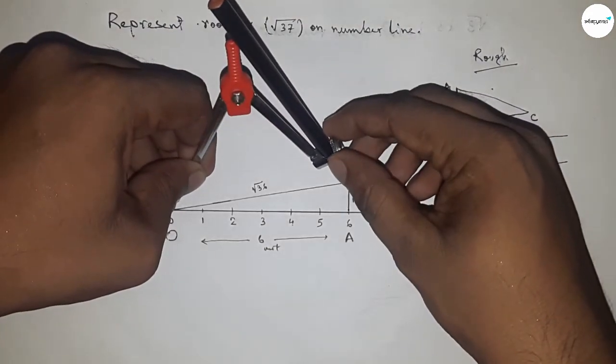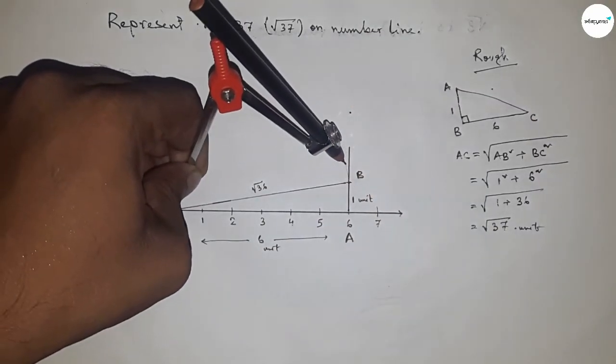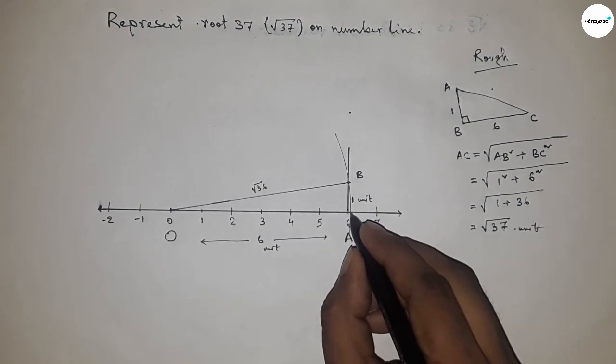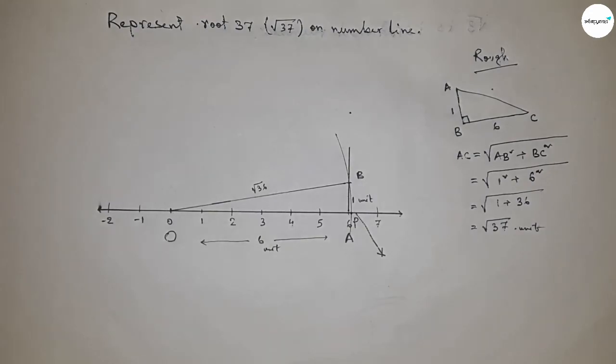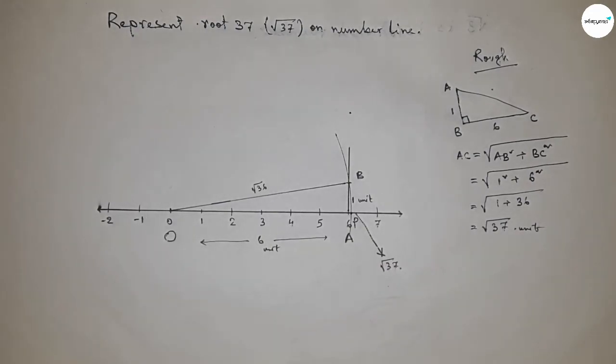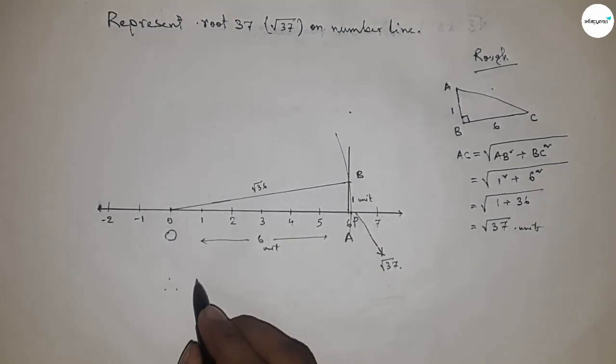Now take the length OB with the compass and draw an arc which cuts the number line at a point. This is point P, and this is the representation of √37 on the number line.